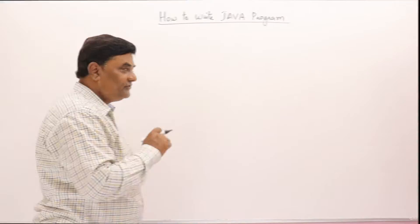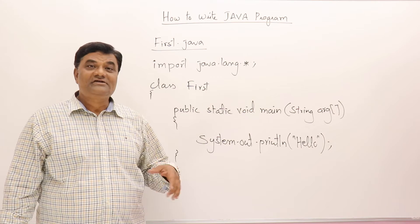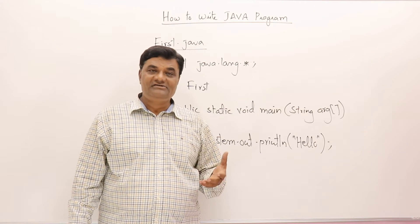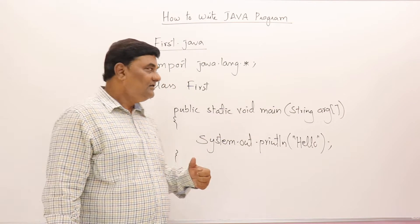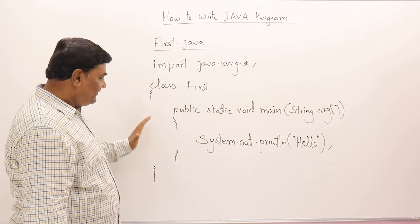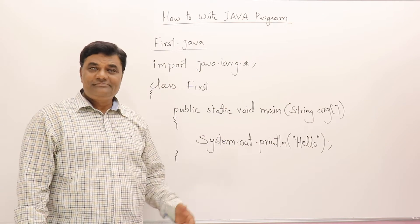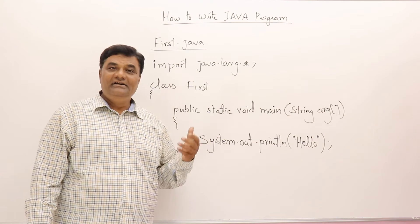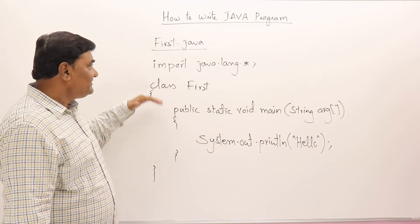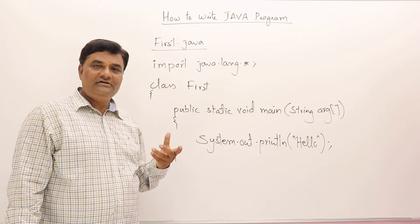What to write, how to write I will show you. I have already written a program here. Let us study the program and also we will know why we write public static void main. This program should be saved as first.java file. You can type this program in any editor like EditPlus or Notepad, and save it as first.java in some folder on your disk.